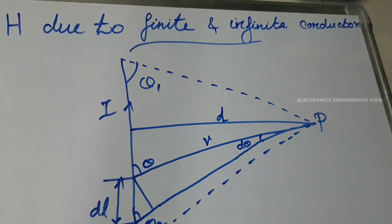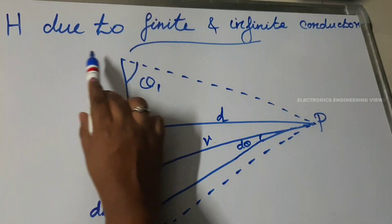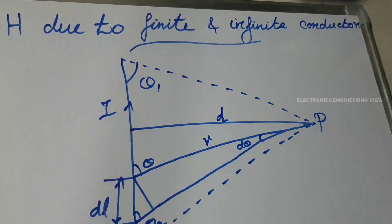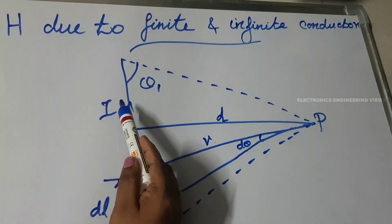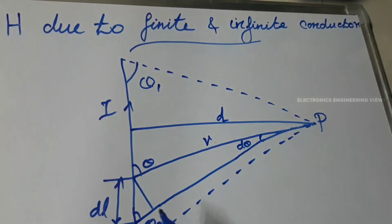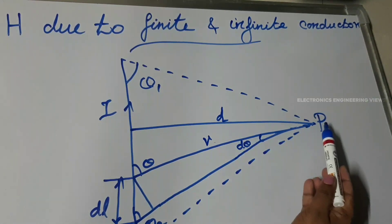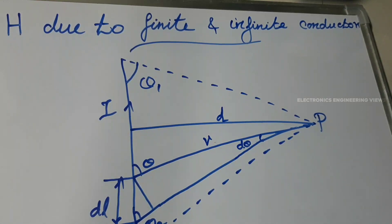Today we have discussed about magnetic field intensity due to finite and infinite conductors. Consider a conductor of finite length carrying current I, and consider a small current element dl in the conductor at a distance r from the point P where magnetic field H is to be determined.